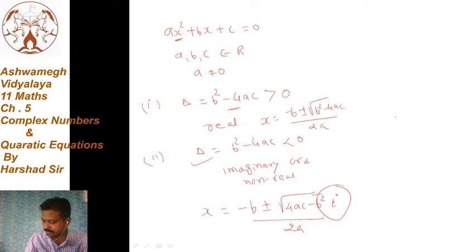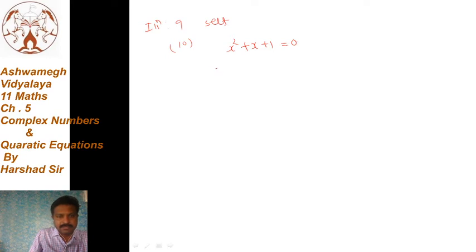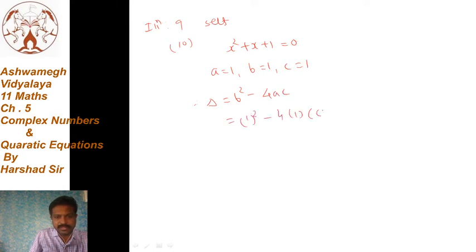एक example के जरिए हम पढ़ेंगे। Illustration number 9 — question number 20: solve x² + x + 1 = 0. हमें इसे solve करना है। Here we have a = 1, b = 1, and c = 1. So discriminant delta = b² - 4ac = 1² - 4(1)(1) = 1 - 4 = -3, जो कि negative है।